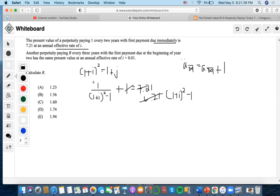We do 1 over 6.21, add one, square root it, minus one, and we get i equals 0.0775.